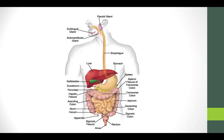The upper GI tract — the mouth, esophagus, and stomach — are mainly focused on digestion, and everything below that is really focused on absorption. Once we eat, we want to be able to absorb the things that we've eaten. That process starts in the duodenum and will continue through the various parts of the small intestine, including the jejunum and the ileum, and eventually empties into the large intestine, or the colon, whose main function is to absorb water back out of the GI tract, resulting in stool.